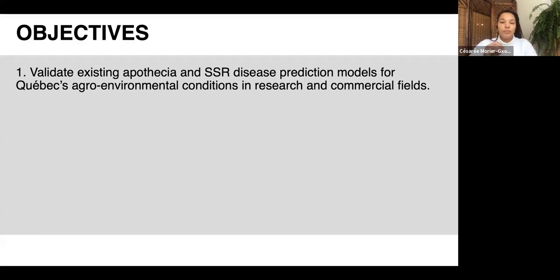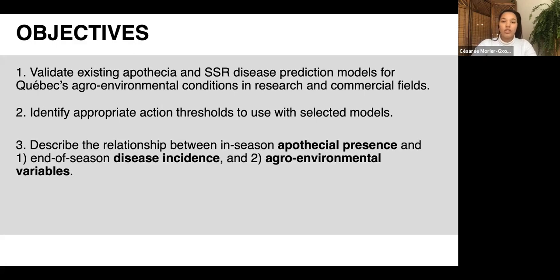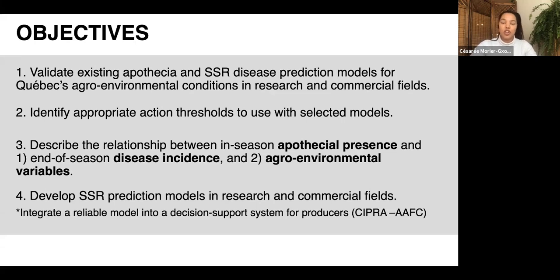My fourth hypothesis is that prediction models based on temperature, relative humidity, and row spacing — data collected in research and commercial fields in Quebec — can accurately predict disease incidence risk. Related to these hypotheses, my objectives are: first, to validate published models for Quebec conditions; second, to identify appropriate action thresholds; third, to describe the relationship between apothecia and disease incidence at season's end; and fourth, to begin developing a model potentially integrated into a decision support system for producers.